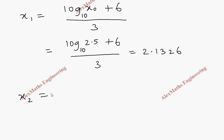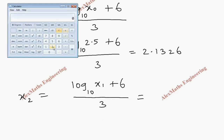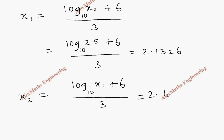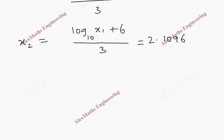Now x₂ is log of x₁ base 10 plus 6, whole divided by 3. We take the value 2.1326, compute log of that value plus 6, then divide by 3. We get 2.10963, which rounds to x₂ equals 2.1096.